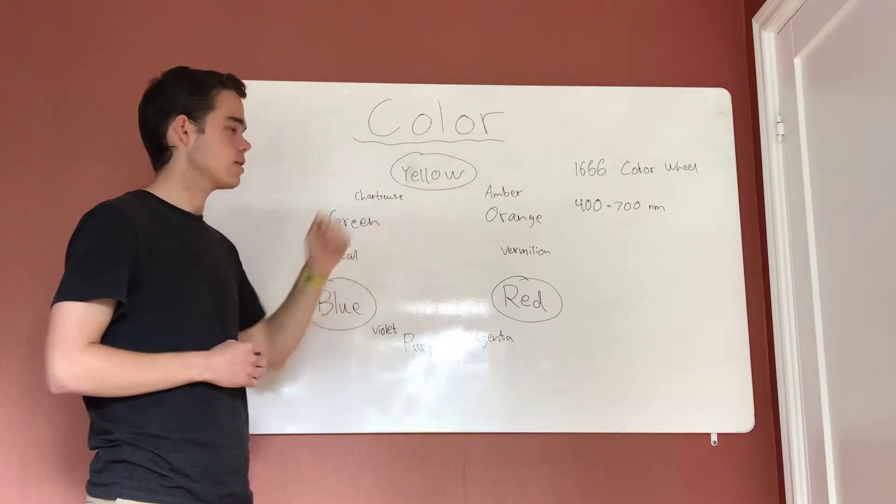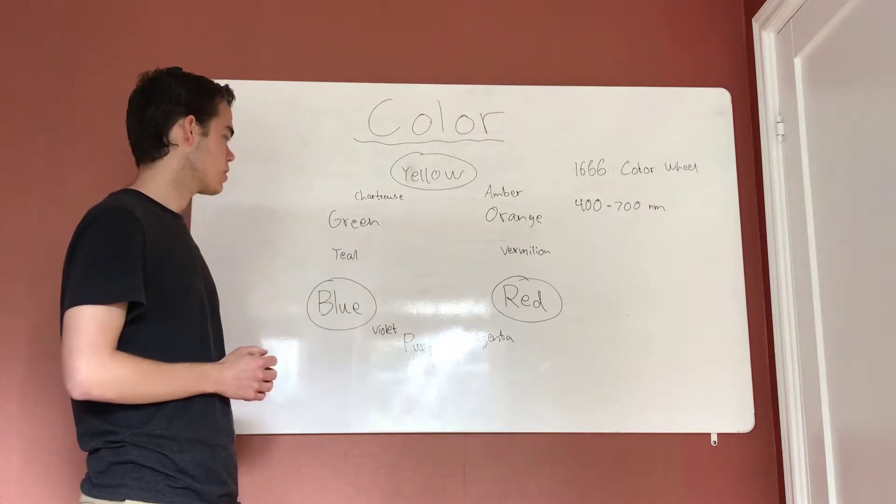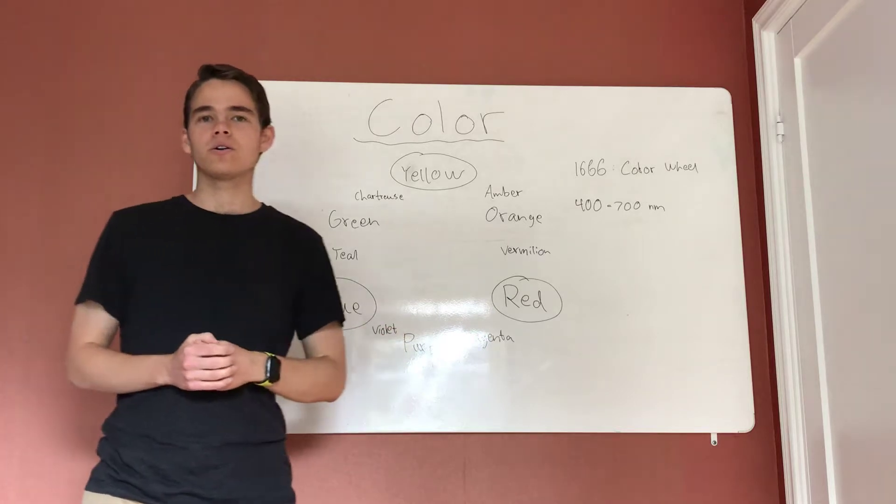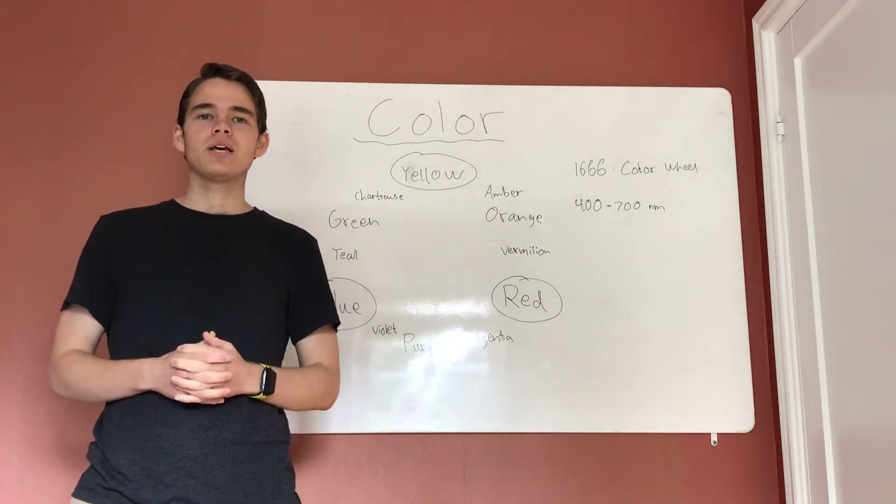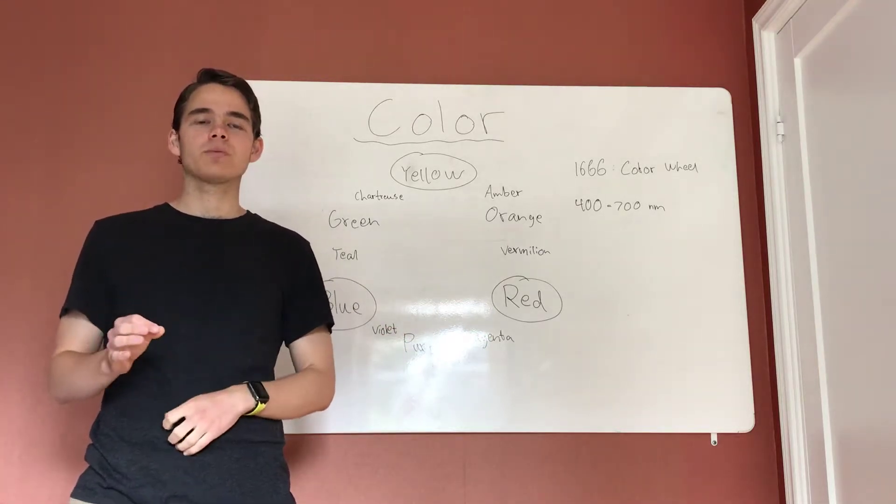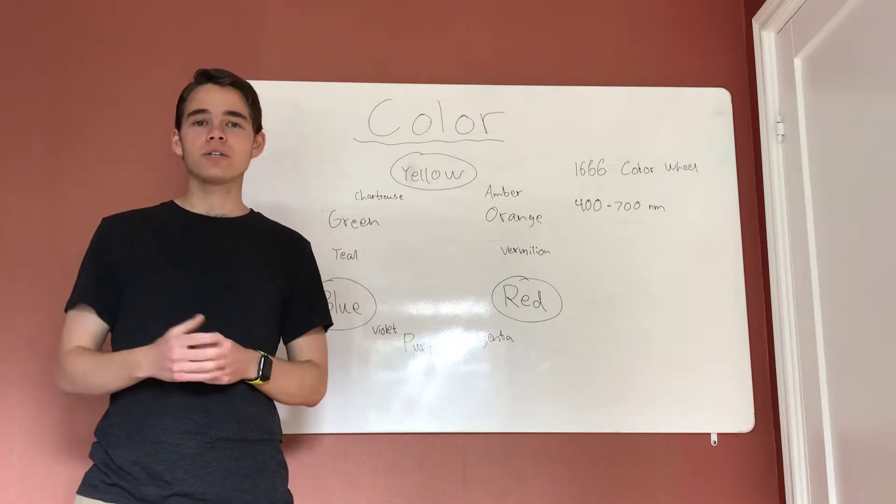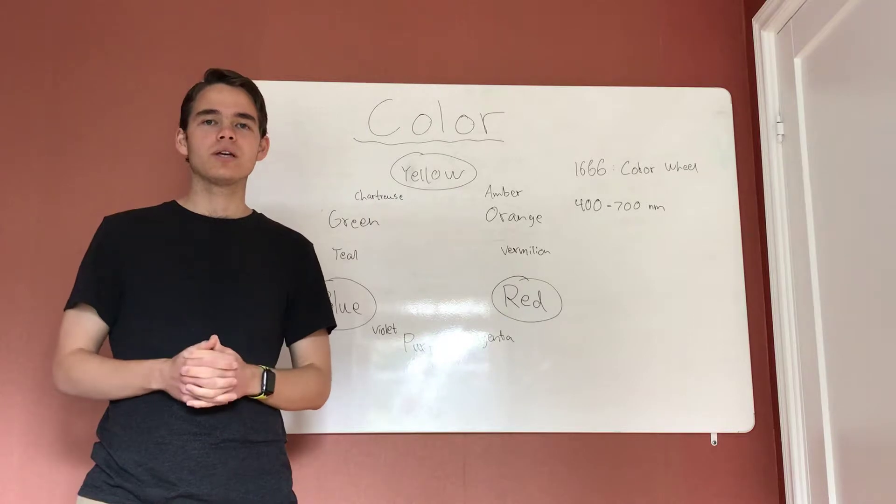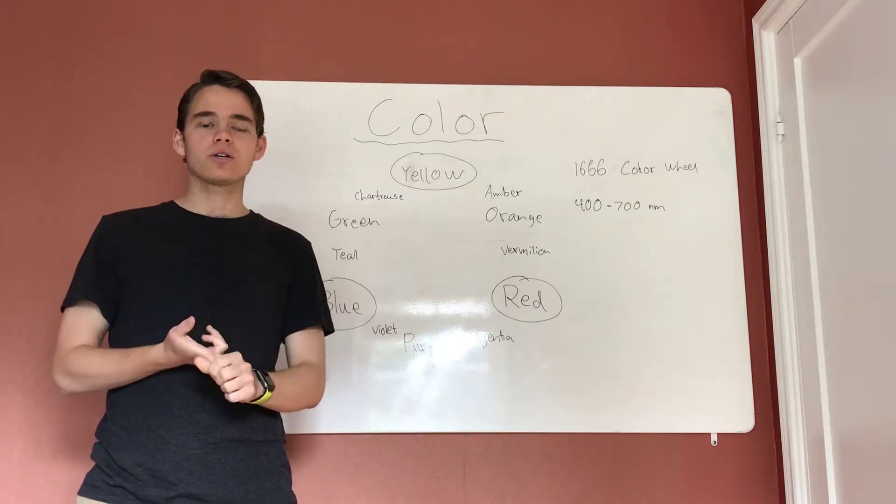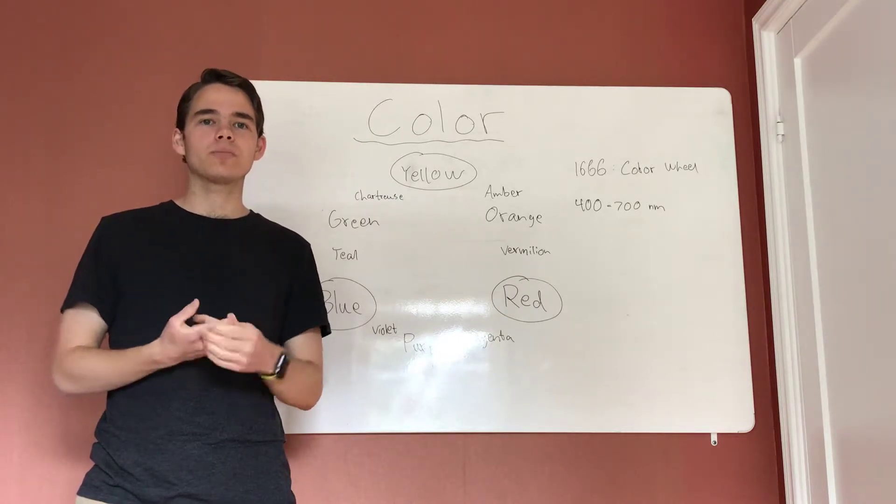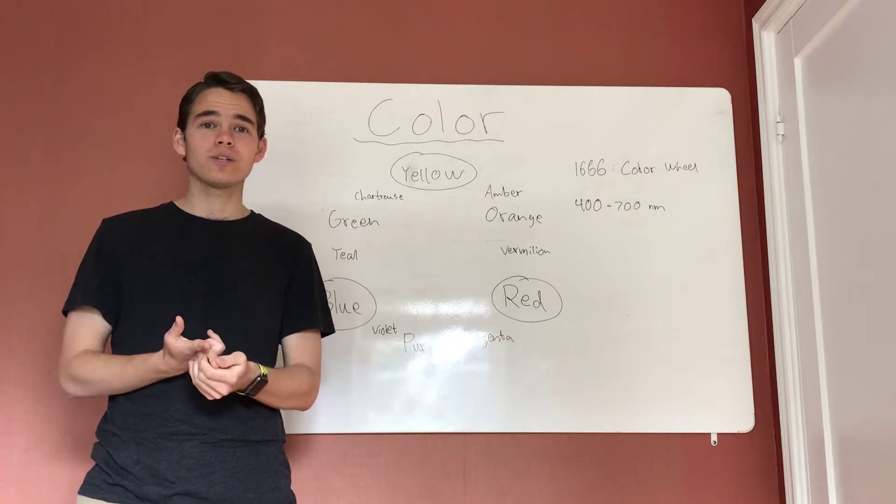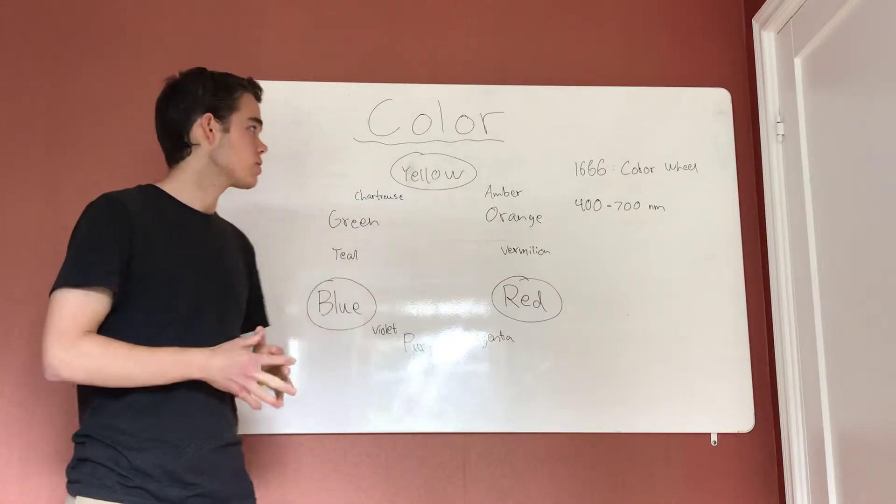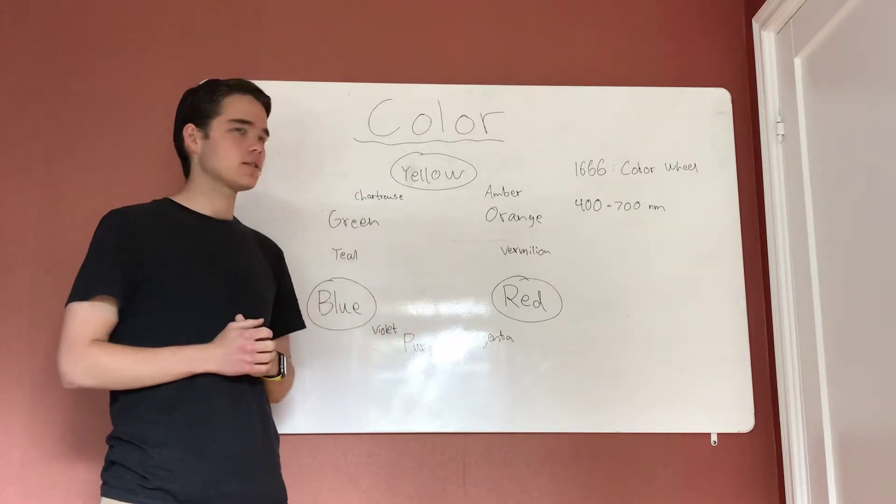Then tertiary colors can be created in three different ways: either by mixing all primary colors, two secondary colors with each other, or one primary and one secondary color with each other. So amber is created by mixing yellow and orange, where yellow is a primary color and orange is a secondary color.